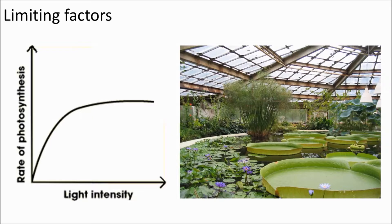One of these three things will be a limiting factor. For example, a plant might have plenty of CO2 and warmth, but if that plant is in the shade, the rate of reaction will level off, as shown in this graph. If you want to increase the rate of photosynthesis, you have to give it more of what is lacking — in this case, light.